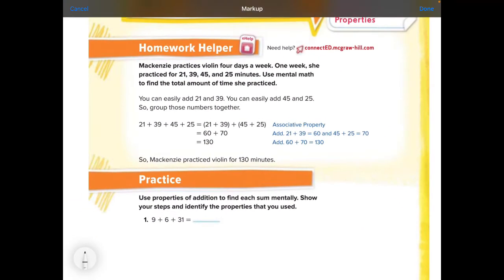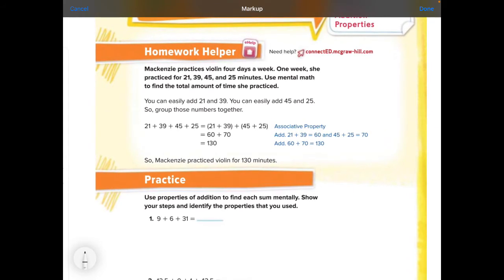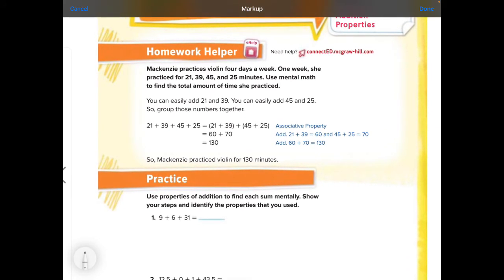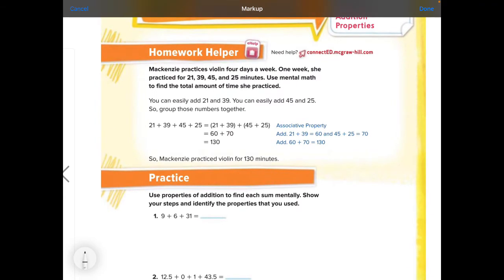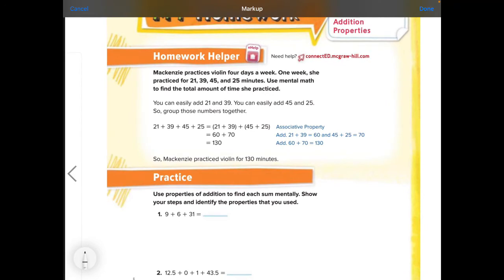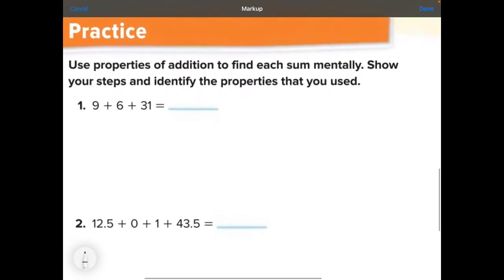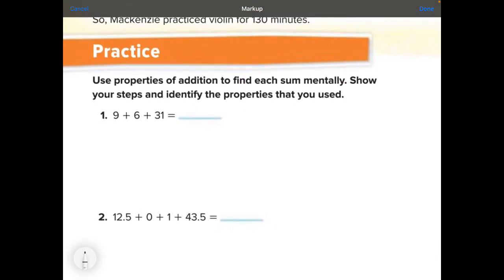We are going to be continuing to talk about the associative property and the commutative property and the identity property. They want us to add up these numbers and label each of the steps. Make sure you write neatly and try to write a little on the small side so you have room for all of it. Number one, show the properties of addition to find each sum mentally. Show your steps and identify the properties that are used.